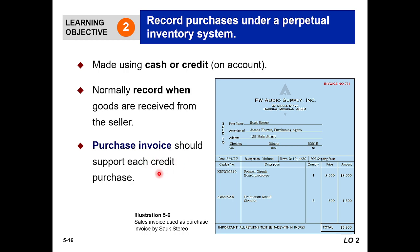Number three: a purchase invoice should support every credit purchase. We can purchase many items and goods, and for every purchase there is a separate invoice. For example, if we purchase five goods today, we collect five separate invoices. So every purchase has its own supporting invoice.